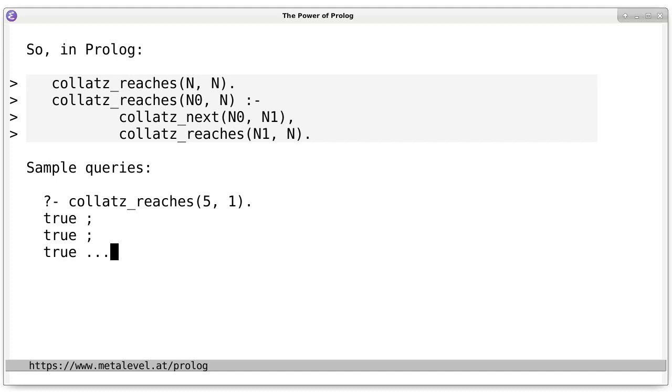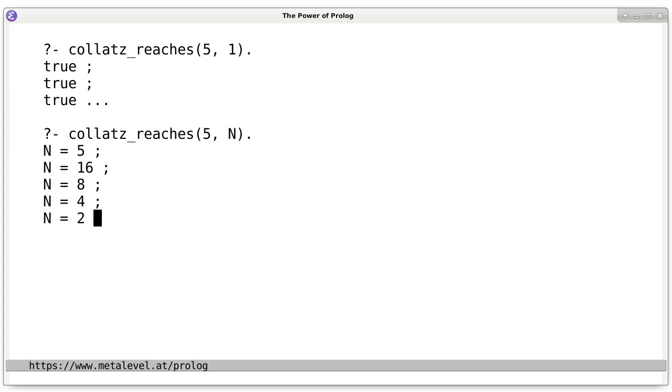And more interestingly, we can also ask which integers can we reach? And in this case, we get the concrete solutions. So, if we start at 5, we can reach 5 of course. And we can reach 16 as the next integer. We can reach 8 by the twofold application of this function f. We can reach 4, 2, 1 and so on. And from there, we already know that we are again in this cycle. 1, 4, 2, 1, 4, 2. And maybe even more remarkably, we can now post additional constraints and ask for example, can we reach some integer n that is greater than 12 if we start from 5. And we get suitable solutions also in this case. And note that we didn't even have to modify this relation in any way. We can now simply add additional constraints to the query. And this also works.